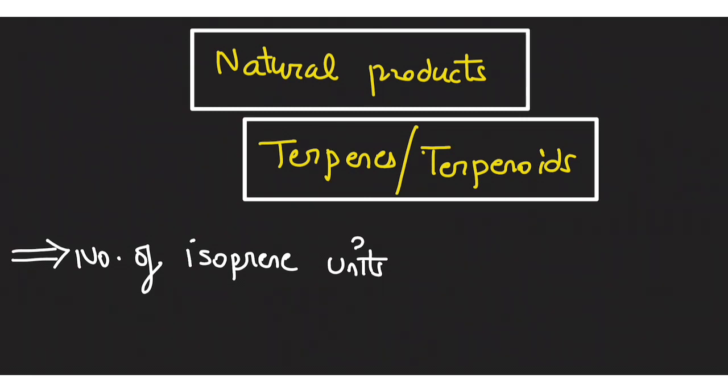we are going to continue natural product chemistry and we were doing terpenes and terpenoids in the last class. So in the last class, we did the video for head and tail linkages or various types of linkages available in the isoprene molecule and the way which they formed terpenes and terpenoids.